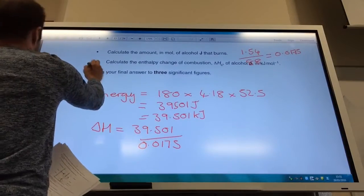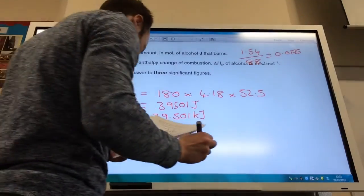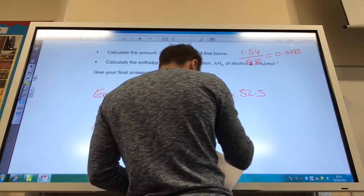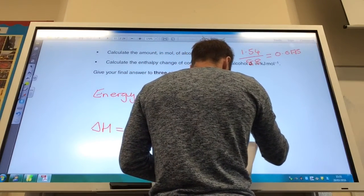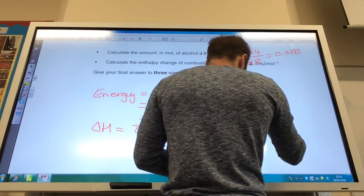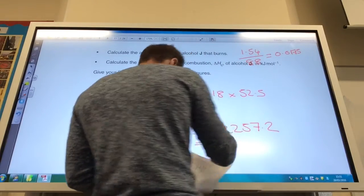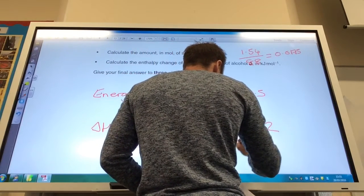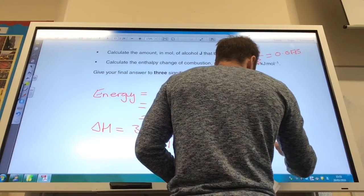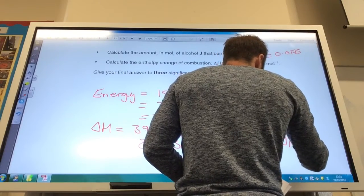And that then gives me, and I'm going to put the minus in now, minus 2257.2 kilojoules per mole. They want the answer to three significant figures, so it's minus 2260 kilojoules per mole.